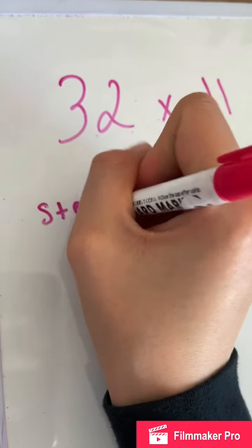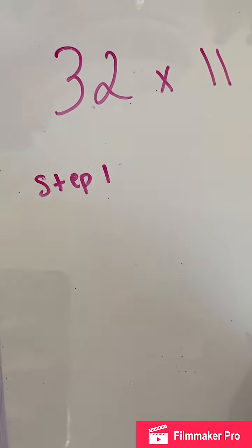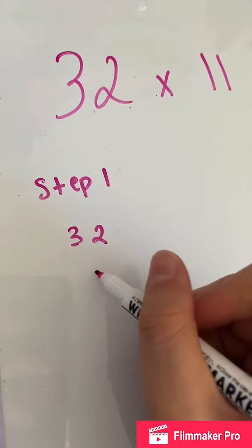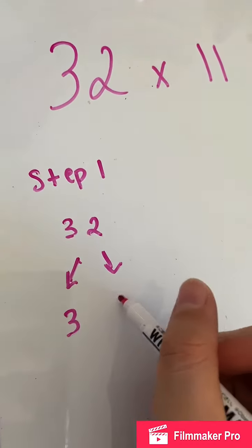So the first step, step one, is we're gonna write our number, which is 32. And then we're gonna divide it into two numbers, which is three and two.